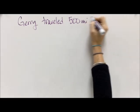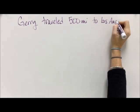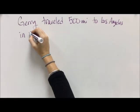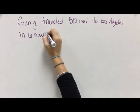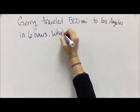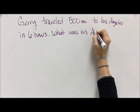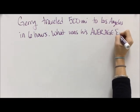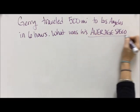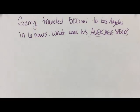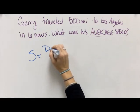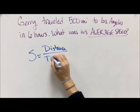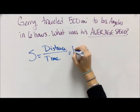So let's look at a problem here. Jerry traveled 500 miles to Los Angeles in six hours. What was his average speed? Because we don't have instantaneous speed. Average speed just means we have to calculate it. We have no idea how fast he was going 200 miles into the trip, but we know that he had 500 miles and it took him six hours to get there.